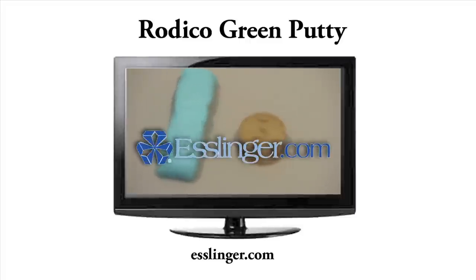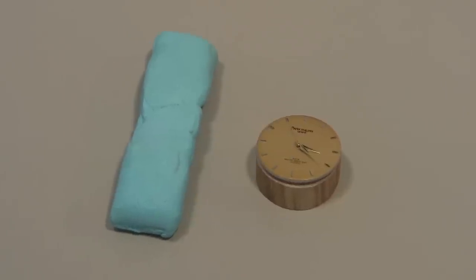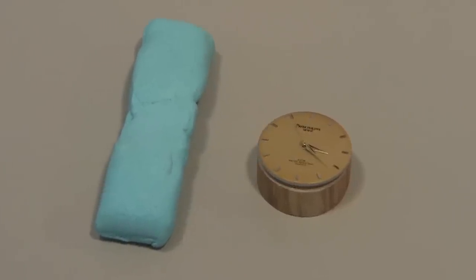Esslinger.com presents Watchmakers Cleaning Putty. The original green putty cleaner was designed for watchmakers to use to clean small and delicate watch parts.